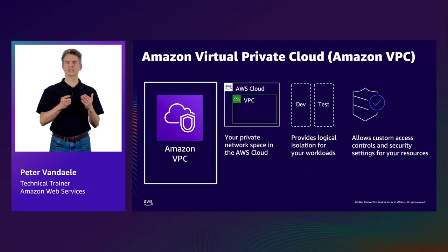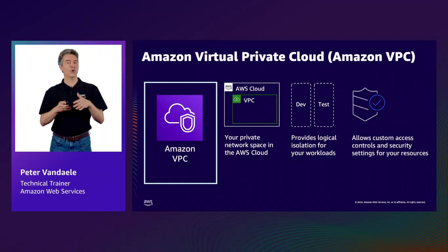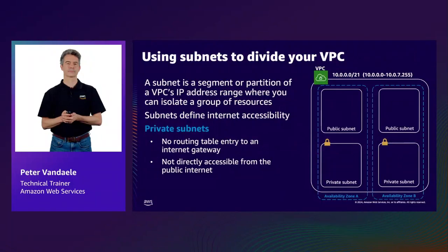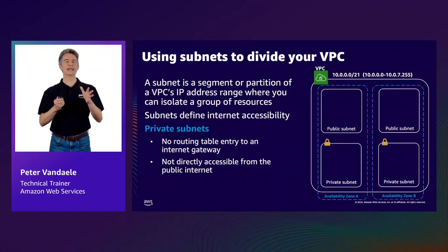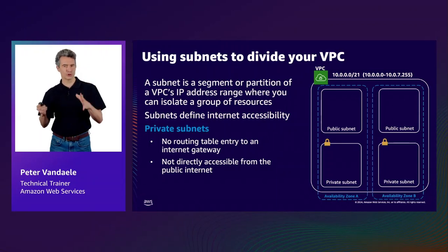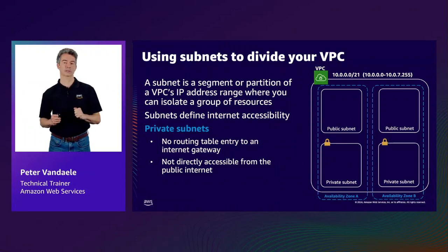Overall, VPCs allow you to control access to your workloads, whether that be public access to the internet or private access only to your on-premises or corporate environment. When deploying a VPC, we must allocate a range of IP addresses. VPC is a regional-level service, so it sits across multiple availability zones.